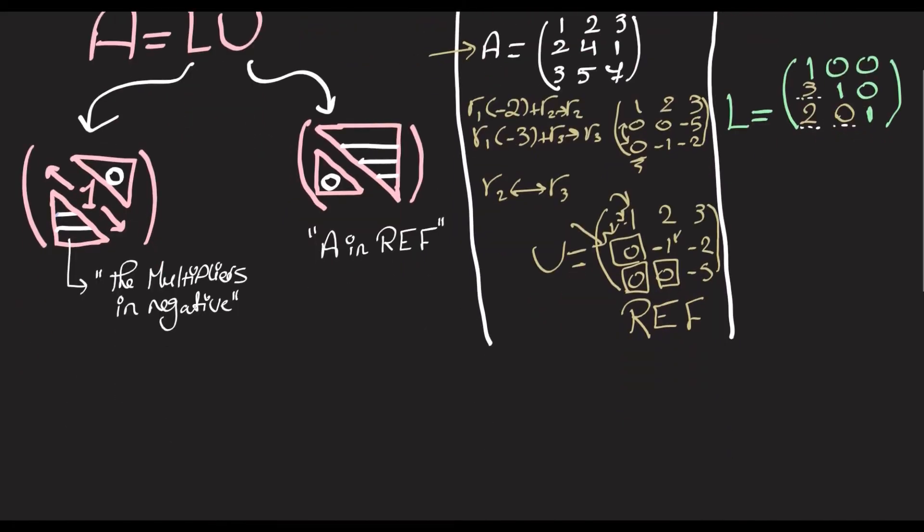Let us try to multiply L and U. So, L is going to be 1, 0, 0, 3, 1, 0, 2, 0, 1. And U is 1, 2, 3, 0, negative 1, negative 2, 0, 0, negative 5. You can pause the video and carry on this multiplication.